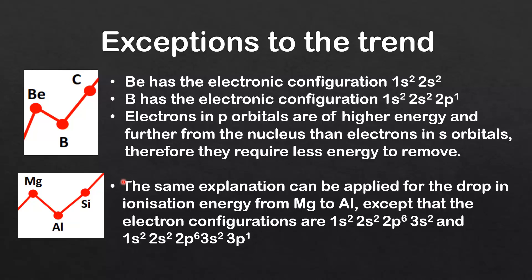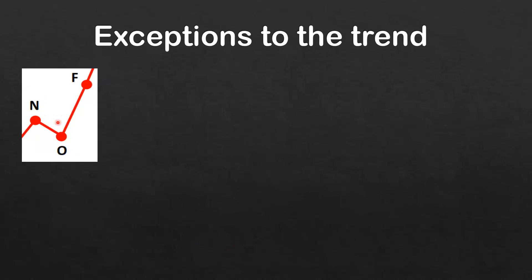The same explanation applies to the drop in ionization energy from magnesium to aluminium, except the electron configurations are 1s² 2s² 2p⁶ 3s² for magnesium and 1s² 2s² 2p⁶ 3s² 3p¹ for aluminium.